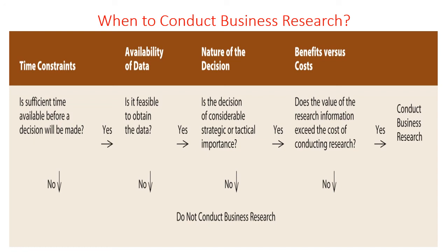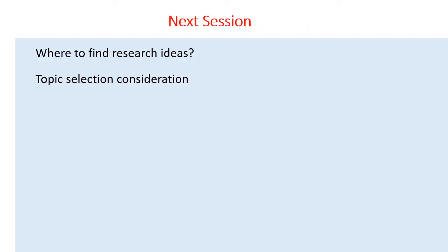If the decision is of strategic or tactical importance, we continue to the next step and compare the benefit versus the cost of the research: does the value of the research information exceed the cost of conducting it? If the cost of conducting the research exceeds the value of the output, we stop. If not, we conduct the business research. We have to follow these steps to decide when to conduct business research. This is all about today's lesson, and we will continue with the next session on where to find research ideas and topic selection consideration pointers.